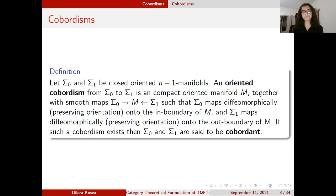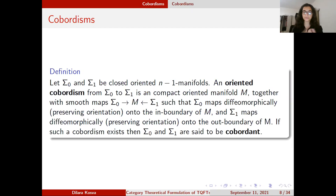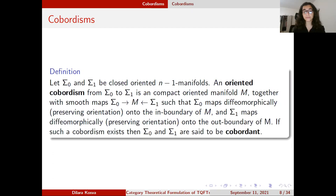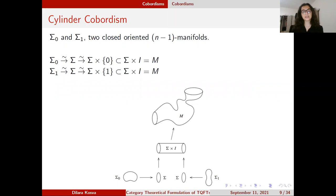An oriented cobordism from sigma₀ to sigma₁ is a compact oriented manifold M, such that there is a diffeomorphism from sigma₀ to the in-boundary of M, and from sigma₁ to the out-boundary of M. We say M's in-boundary is diffeomorphic to sigma₀ and out-boundary is diffeomorphic to sigma₁. If such an M exists, sigma₀ and sigma₁ are called cobordant. This relation gives an equivalence relation, and when we quotient on closed oriented (n−1)-manifolds, we get a group — an important object in differential topology.